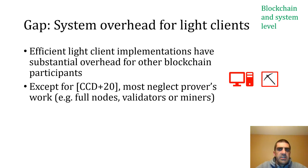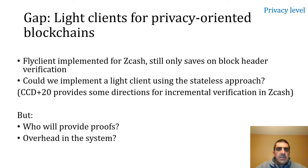Moving away from the client to consider the systems as a whole, the majority of systems neglect the overhead to the rest of the blockchain participants. For example, doing recursive SNARKs can be very costly for the prover, and only one work considered this to be a problem. Finally, another question is how light clients are implemented in privacy-preserving systems such as Zcash. Zcash has a light client implemented which improves the SPV approach, but the question is: could we do stateless Zcash and therefore have a very efficient light client? A paper from 2020 provides some directions, but the question remains who will be responsible for providing the incremental proofs, and what will be the overall overhead in a system which is already quite cumbersome.